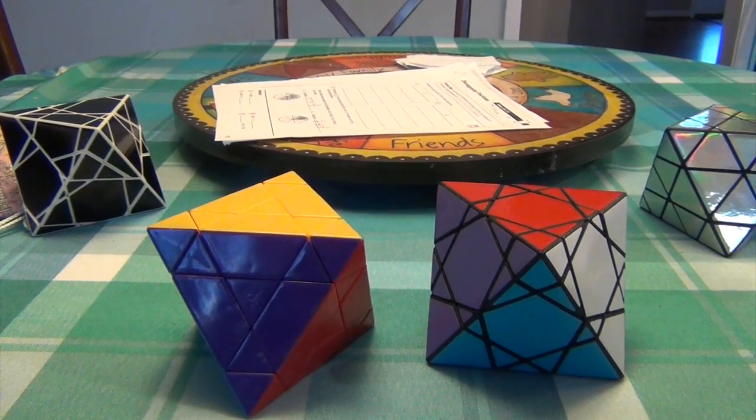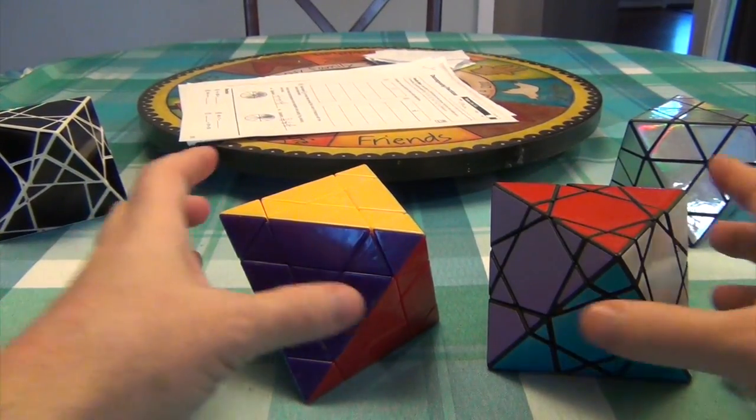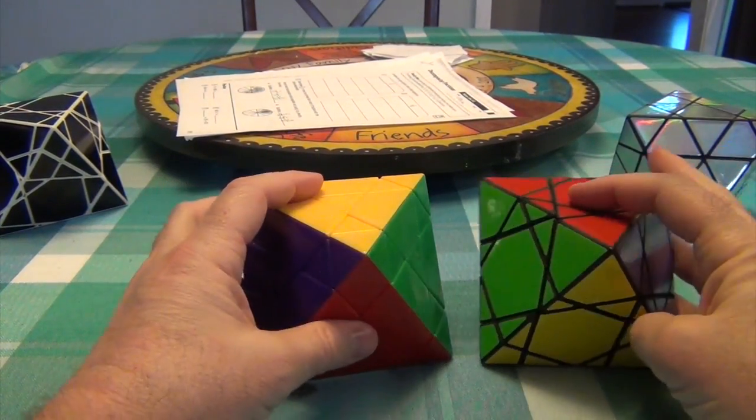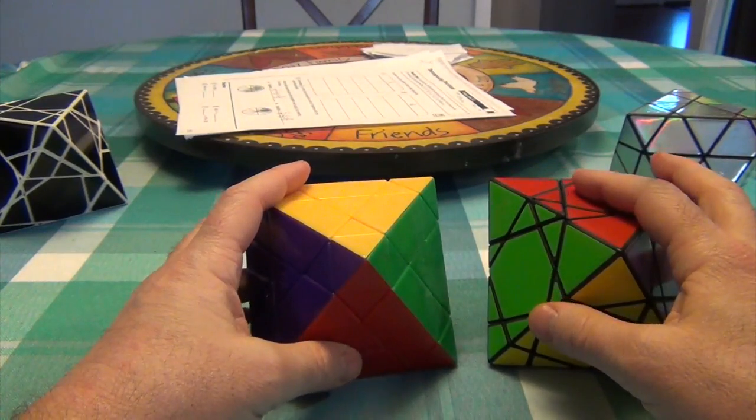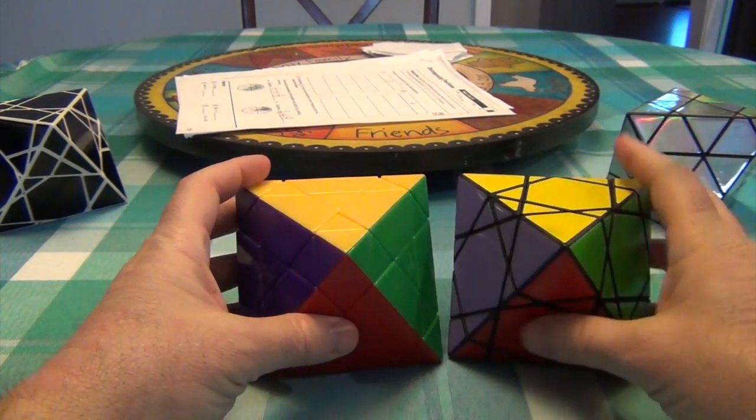So before embarking on the solve, I think it's necessary to define our perspective with this because what you think are corners are actually not corners, and what you think are centers are actually not centers. So you have to change your thinking about this a little bit, change your perspective.